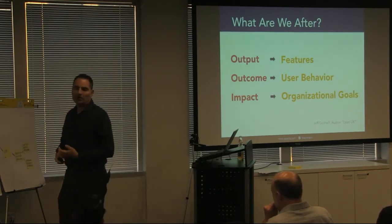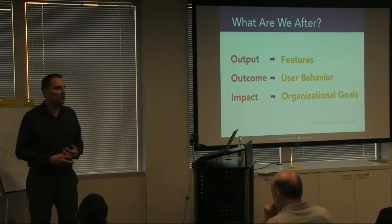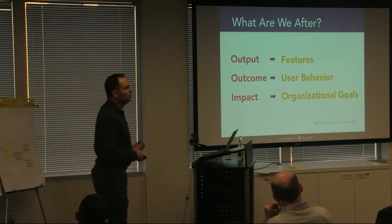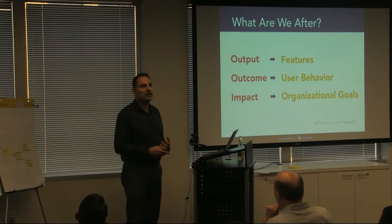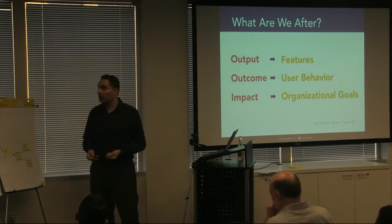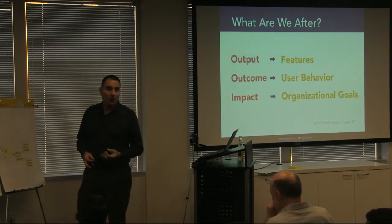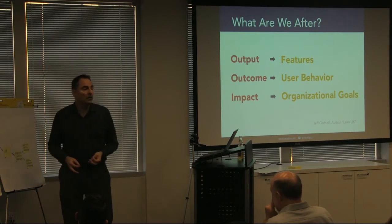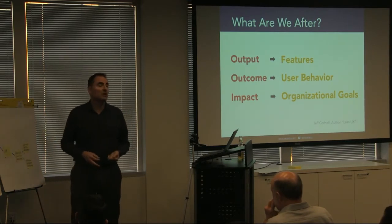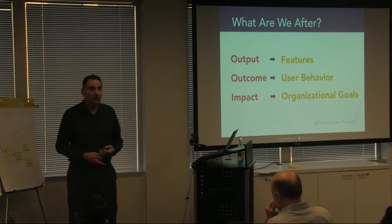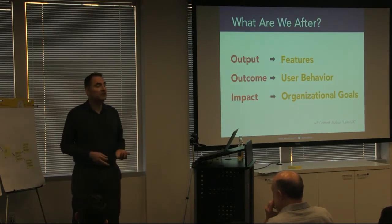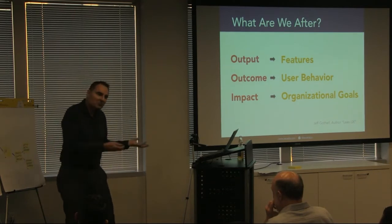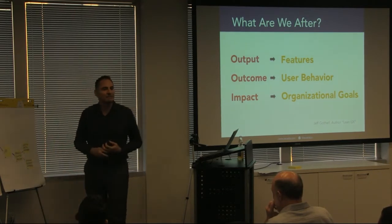Gojko Adzic, the guy who wrote the Impact Mapping book, told a story at a conference about an IT project at the BBC in England where, after three years, they had burned 75 million pounds before somebody finally realized it was very unclear what value this project had actually produced to date.